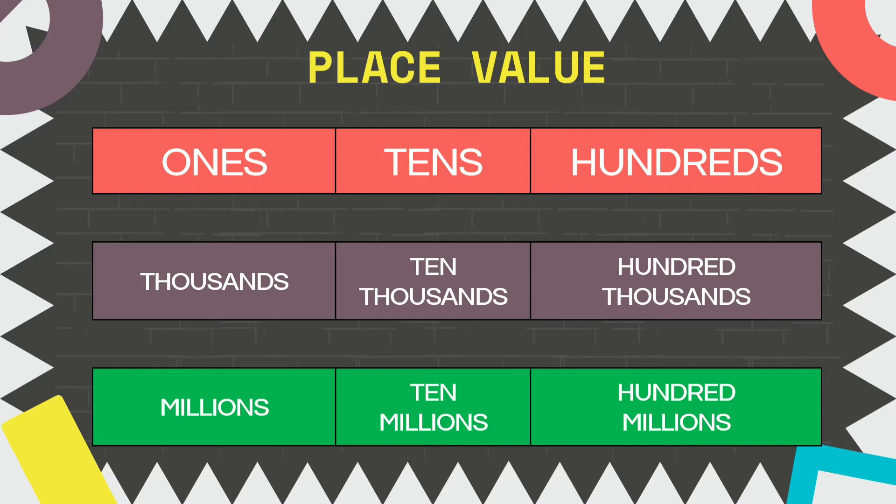Take note of the correct spelling. And always remember that in a 9-digit number, we have 3 periods, namely units, thousands, and millions.